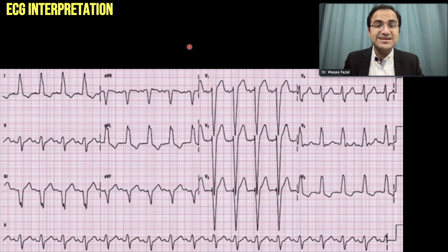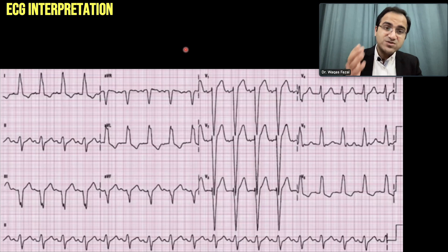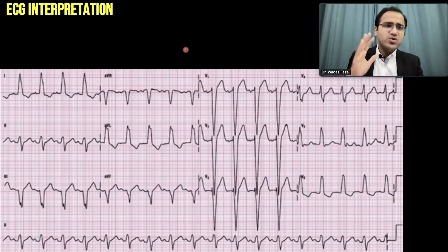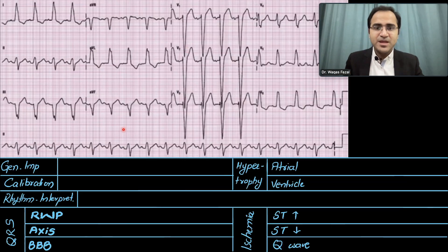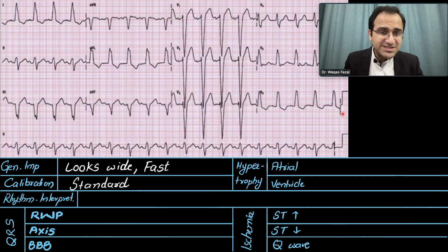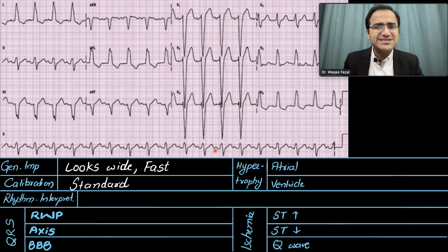Now coming to the second ECG. You should pause the video and try to solve it yourself before continuing. The general impression is that the ECG looks fast and there are wide QRS complexes — it looks wide and fast. Looking at the calibration: since the calibration marker has been cut off we cannot see the box, so we label it as standard calibration.